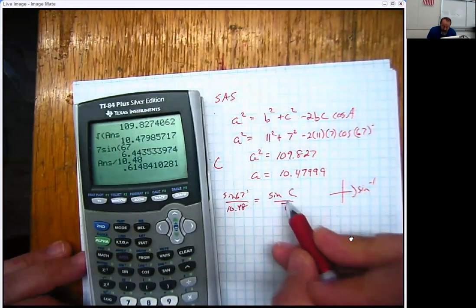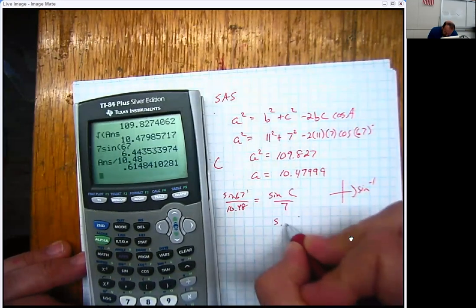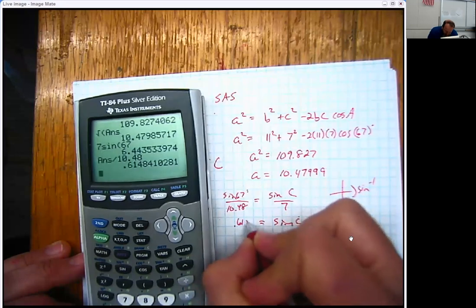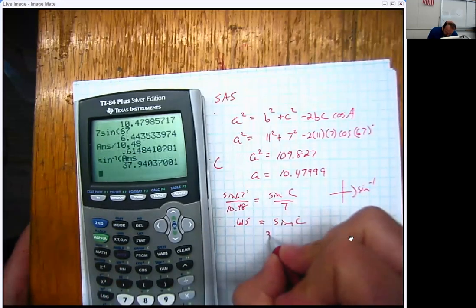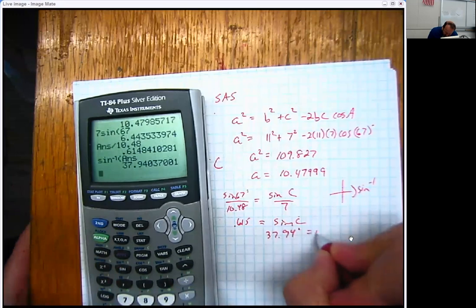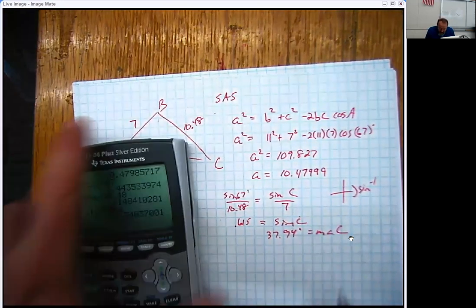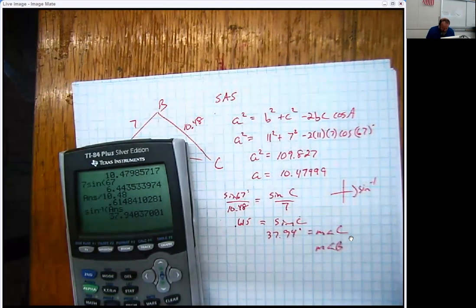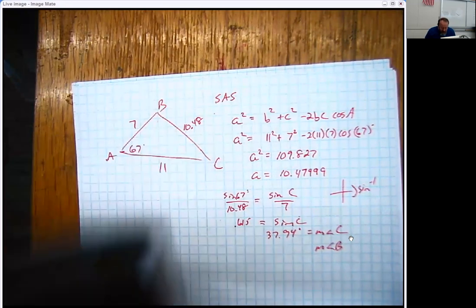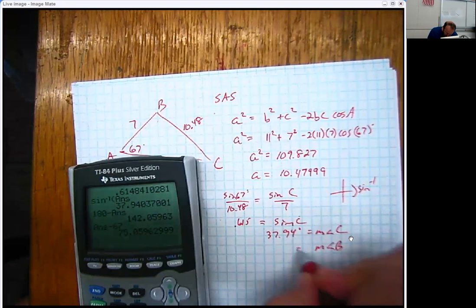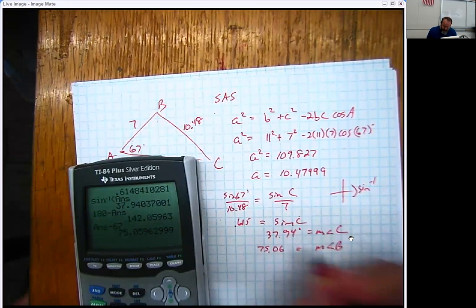I have the sine of C as 0.614, 615. Inverse sine, and now I've got 37.94 is the measure of angle C. Clearly, we only have one thing left to do, which is to find the measure of angle B. And that's just going to be found by taking the 180, subtracting what we had, and subtracting that original value. And I just found out that the measure of angle B is 75.06. Perfect.